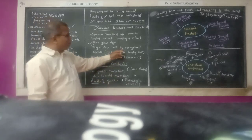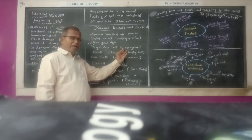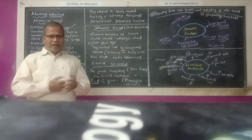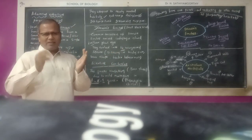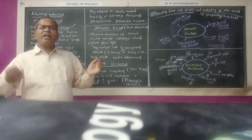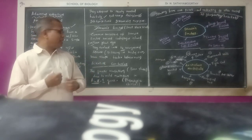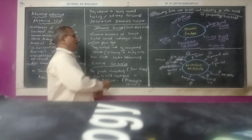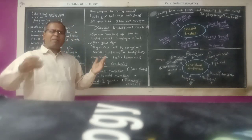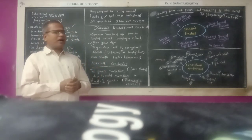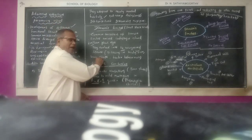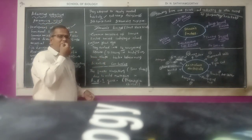Over many essential years, from a common ancestor — just one — 14 different types of Darwin's finches are developed. Body size is somewhat different, and the shape is also different.